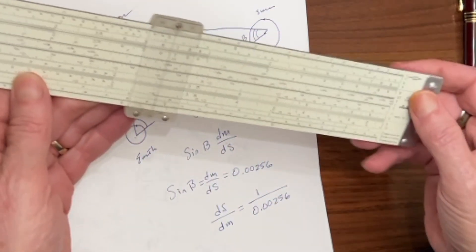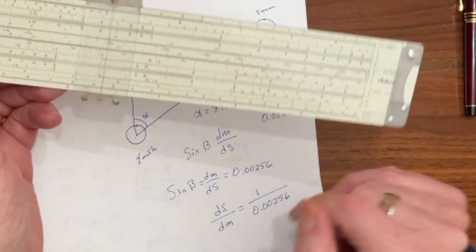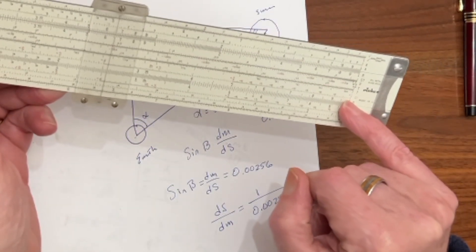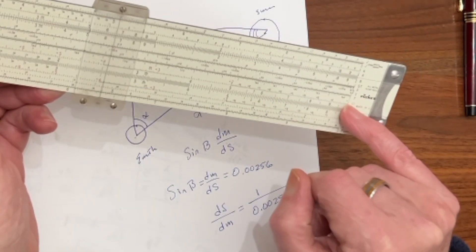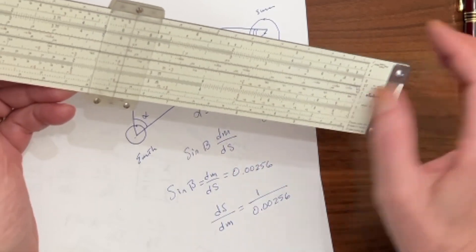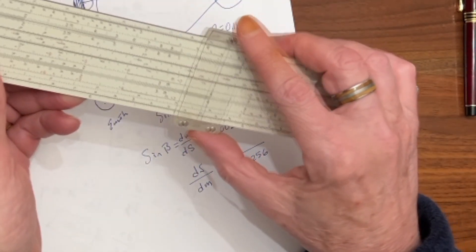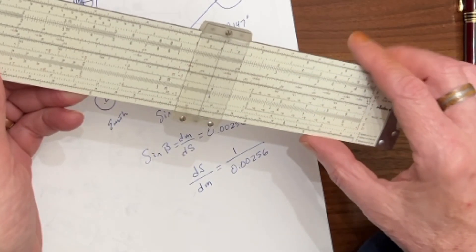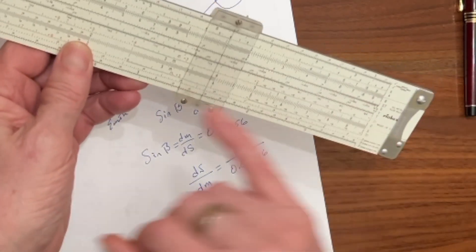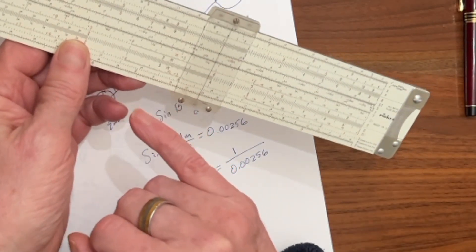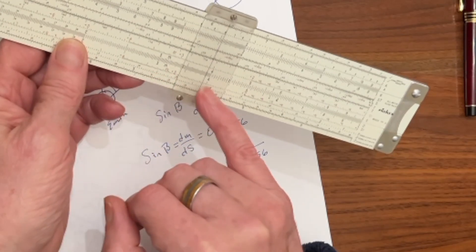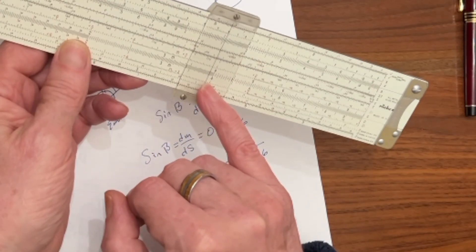Now, the easiest way to do that is since the CI scale, which is 1 over x, is already lined up with the index, we can just come out to 2.56 and read straight down, and that means that the distance to the sun is 390 times the distance to the moon.